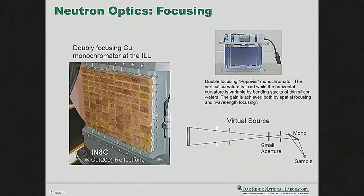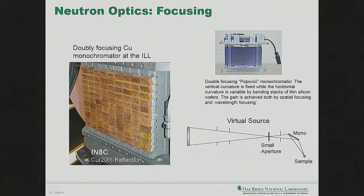Focusing optics: you can use mirrors to focus, or curve a monochromator made of many small mosaic pieces. This focuses neutrons onto the sample — I'm giving up knowledge of the incoming angle, which degrades resolution, but I get more neutrons in the experiment. You can use a virtual source technique: focus the beam through a tiny aperture in a large shielding wall, so background radiation from the source can't pass through the small hole. On the other side the beam spreads out again and a second focusing monochromator refocuses it onto the sample, improving signal-to-noise.